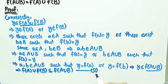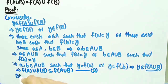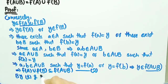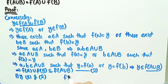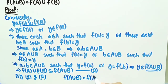Using both inclusions, we can write that f of A union B is equal to f of A union f of B, which is the required result.